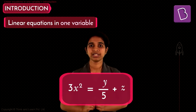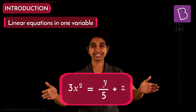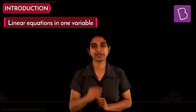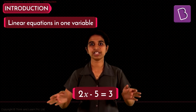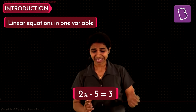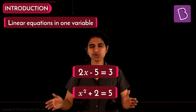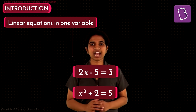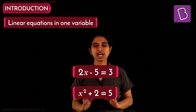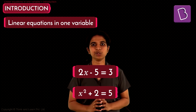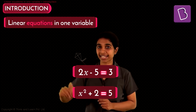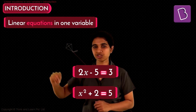We don't want an equation with three variables; we want a simpler one with just one variable. For example, 2x − 5 = 3 is an equation in one variable. x² + 2 = 5 is again an equation in one variable. There is only one unknown quantity; everything else is known.